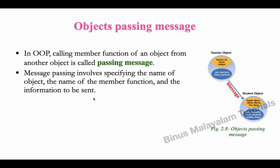So in message passing, we specify what the name of the message is. First we specify which object, then we specify which function, and then we provide the information. We specify the object, the member function, and then the information to be sent in the message.